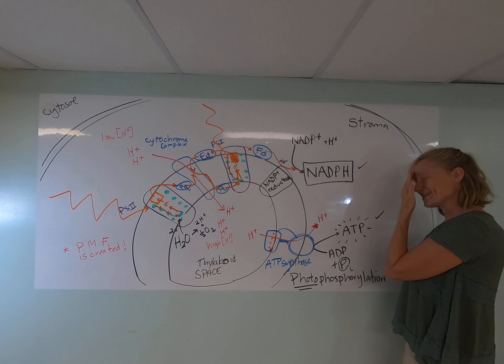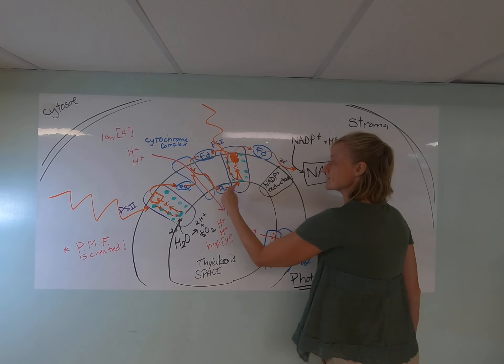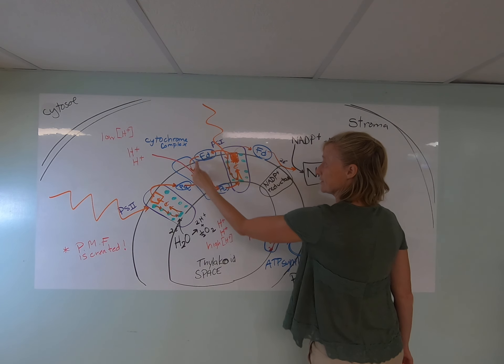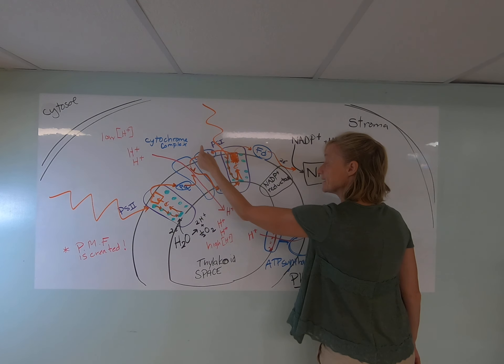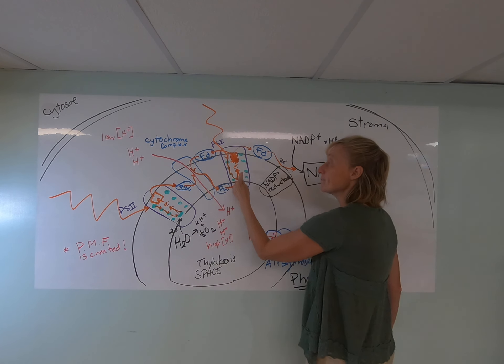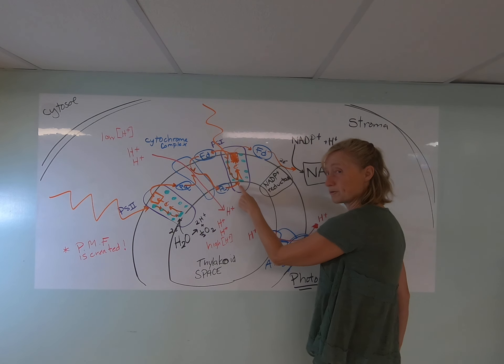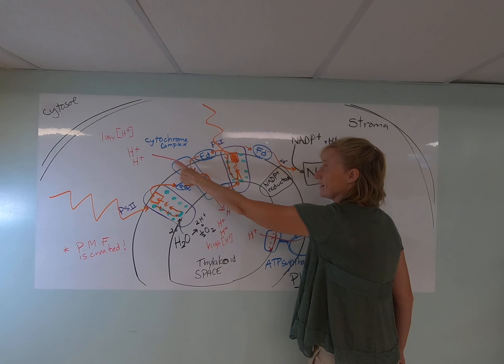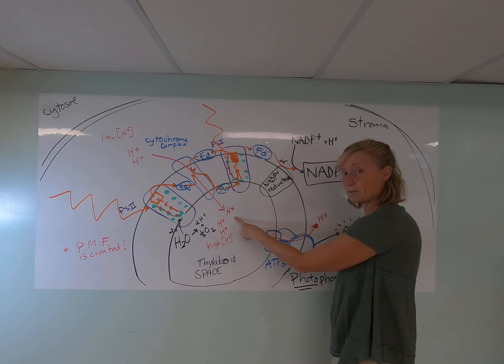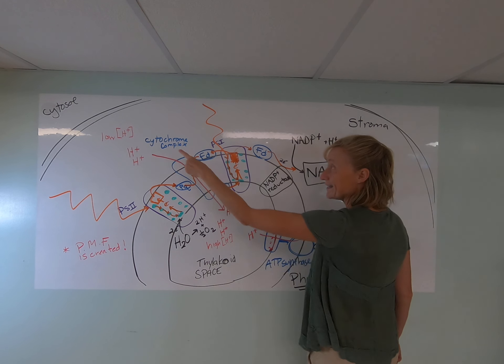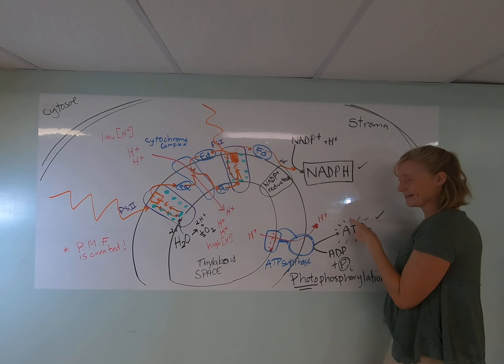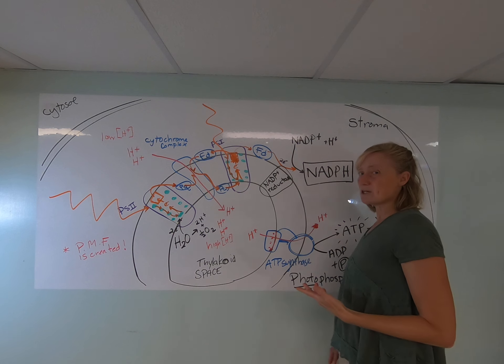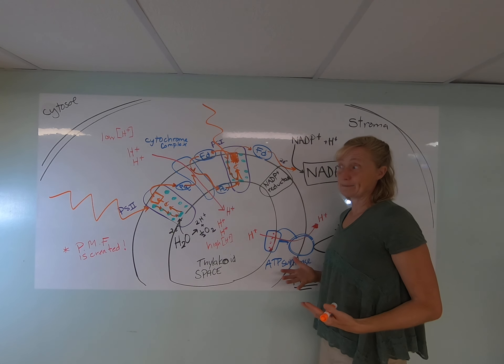So in cyclical electron flow, there's a cyclical cycle of electrons. They're getting excited, they're falling back down, they're getting excited, they're falling back down. But as they fall or flow through the electron transport chain, that energy that's released is used to pump protons across the thylakoid membrane, creating a gradient that's used to make ATP. So it's just another way of making more ATP.